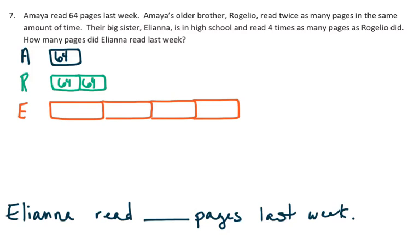So what we have to do is we have to figure out 64 times 2, and that's for the amount of pages for Rogelio. And I'm going to do this using the standard algorithm, and that's equal to 128.